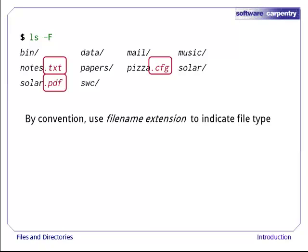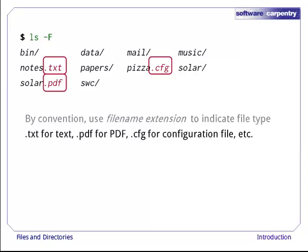.txt signals a plain text file, .pdf indicates a PDF document, .cfg is a configuration file full of parameters for some program or other, and so on.